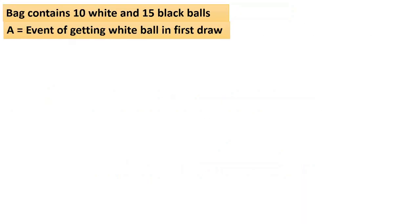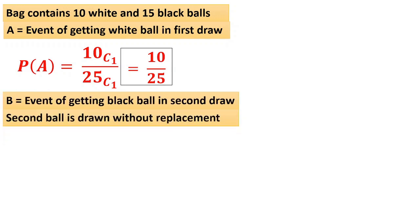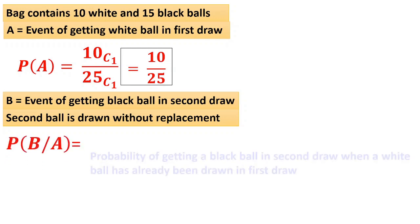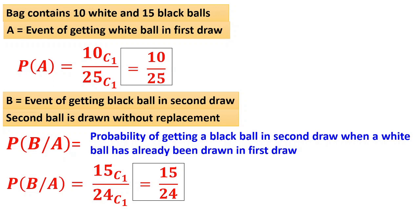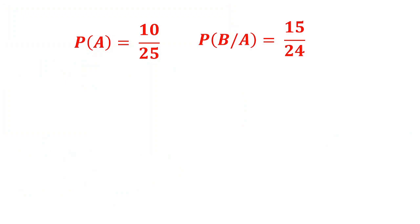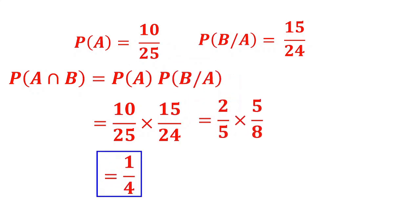The bag contains 10 white and 15 black balls. P of A — event of getting a white ball in the first draw — is 10C1 by 25C1, which is 10 by 25. For B slash A — probability of getting a black ball in the second draw when a white ball has already been drawn — the total number of balls is reduced. Therefore it becomes 15C1 by 24C1, which is 15 by 24. In the second draw, since a white ball was already drawn in the first, the denominator is 24C1. Now using the formula: P of A intersection B = 10/25 into 15/24. The answer is 1 by 4 after cancellation.